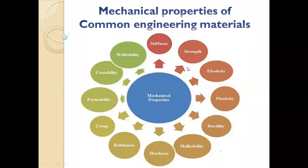Key mechanical properties: strength is the load a material can take; elasticity means regaining original shape after load removal; plasticity means retaining a deformed shape; ductility means we can draw the material into wires; malleability means we can make sheets; hardness is resistance to penetration; brittleness is opposite of ductility — the material cracks with small load; and weldability varies between materials.